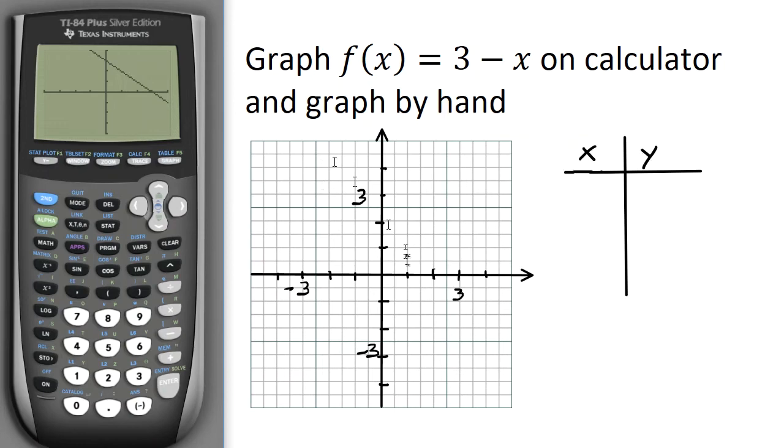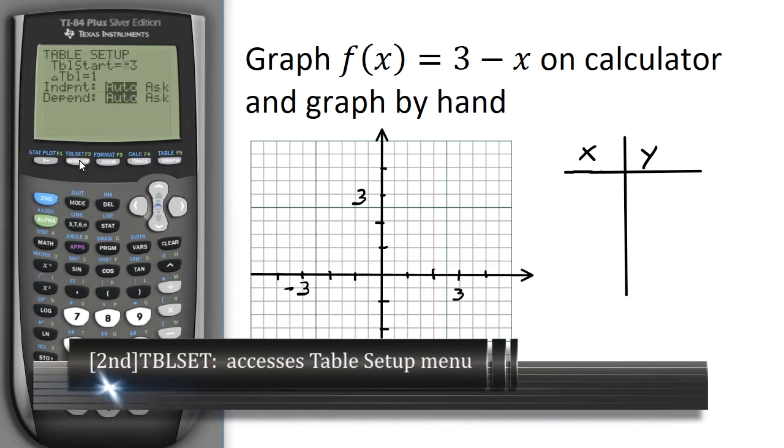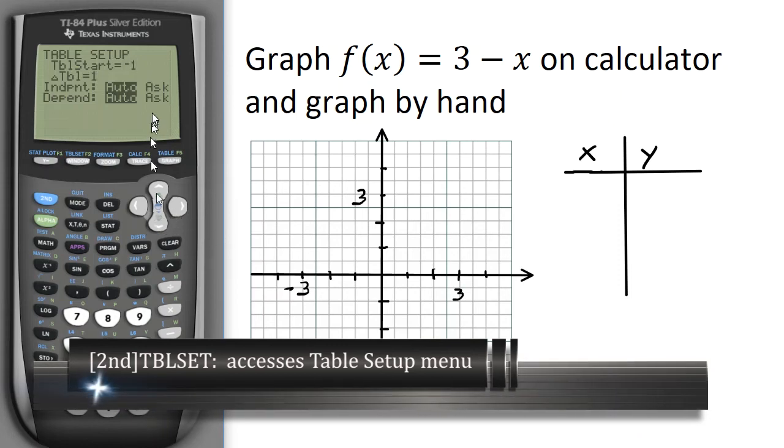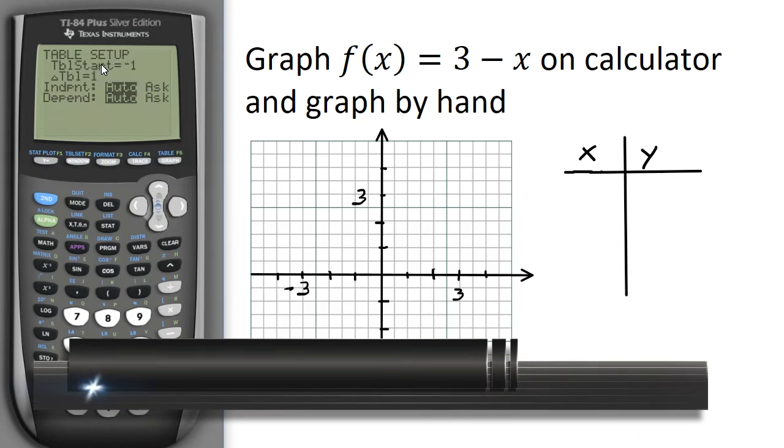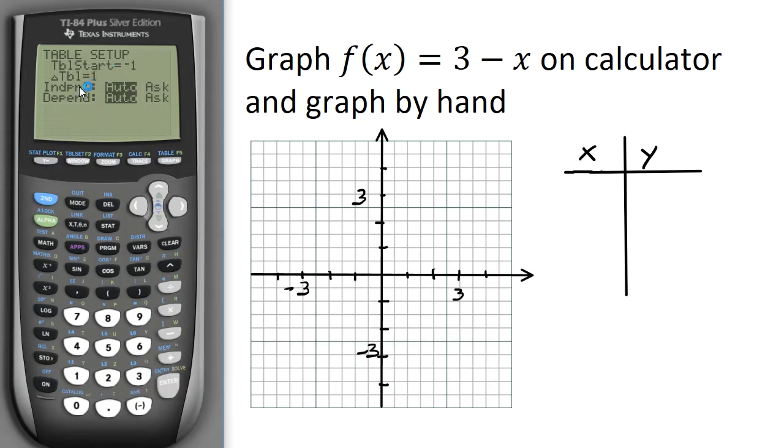Okay, now I can clearly see what my graph looks like, but I want to be able to get some x, y points and put them on my graph. So I'm going to go to second Table Set, and I think I'll start at -1, and I'll go up by 1. So the table start is your very first or lowest x value, and the delta table, that little triangle there is a Greek letter delta, that means go up by 1 every time, so it'll be -1, 0, 1, 2, etc. I want to leave independent x variables at auto and the dependent y variables at auto.